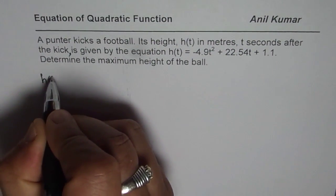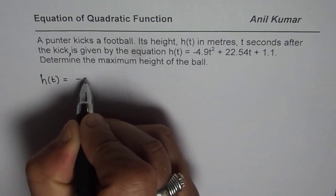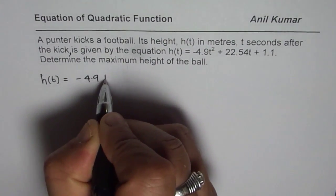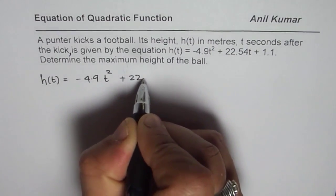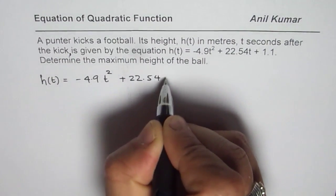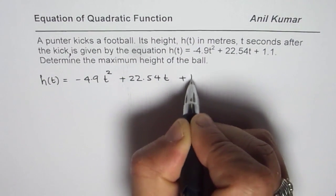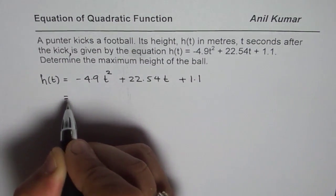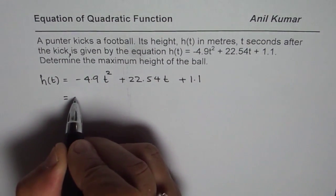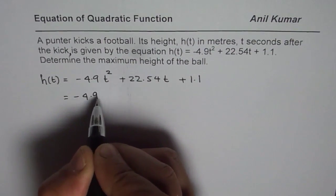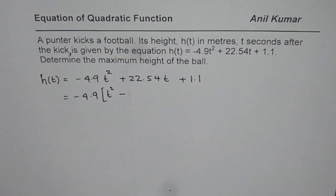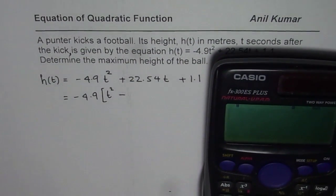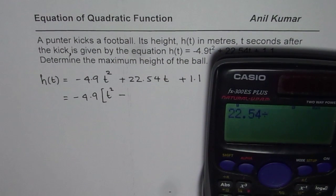We are given the function h(t) = -4.9t² + 22.54t + 1.1. You need a calculator to do this question. Let us first factor minus 4.9.